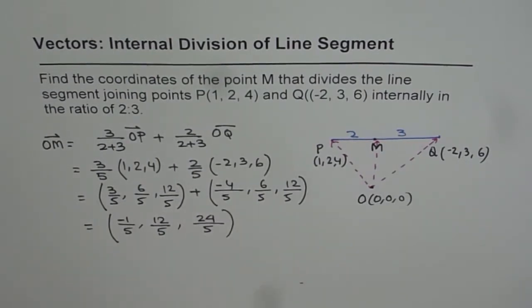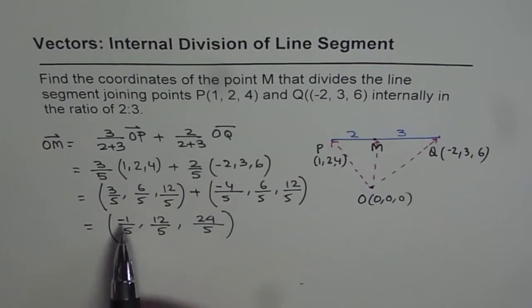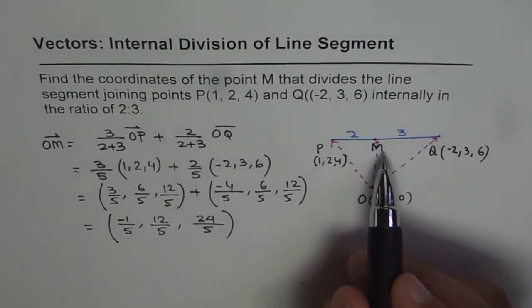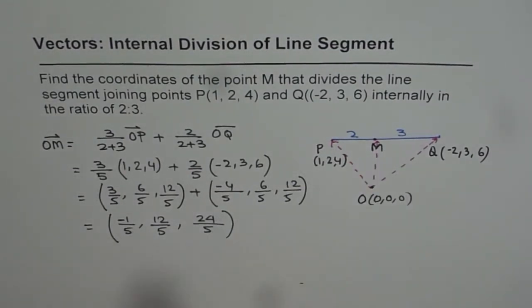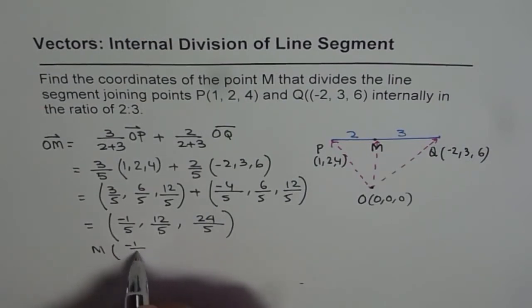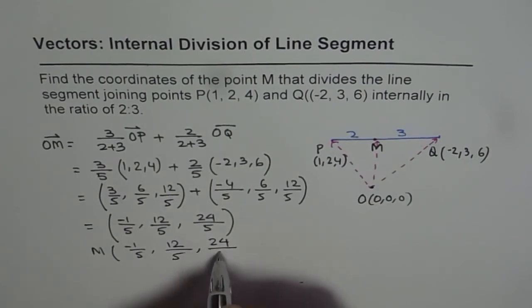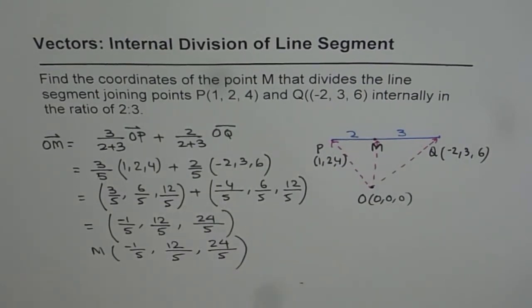So that is how vector OM is defined. Now if OM is (-1/5, 12/5, 24/5), then the coordinates of point M are these values. So M is (-1/5, 12/5, 24/5). That is how we can get the coordinates of point M.